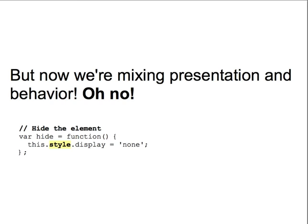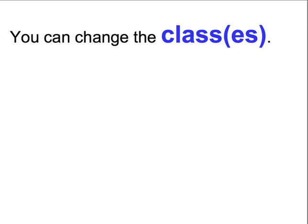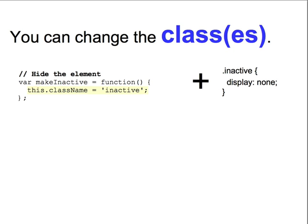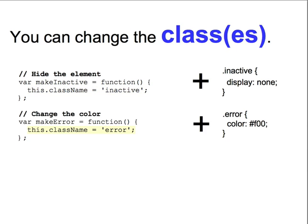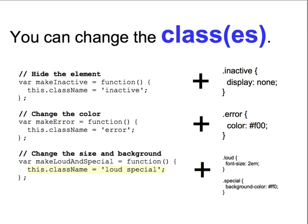So, we're changing the style of elements on the page with JavaScript, but now we've got a problem — we're mixing presentation with behavior. If our designer wants to change what a certain application state looks like, he'll have to dig into the JavaScript code to do so. We need to find a way to enforce our separation of presentation and behavior while still allowing our JavaScript to affect the page. We can change the class names of elements using JavaScript. This is a much better approach because it allows us to use classes to define application states without saying what the presentation of those states should be. So, instead of hiding an element with a style, we can give it a class name of 'inactive' and define that inactive elements are hidden in CSS. Or, instead of changing the color with style, we can give the element a class of 'error' and define that errors should be in red in CSS. We can even define multiple class names in JavaScript that correspond to multiple CSS rules.